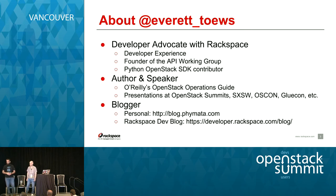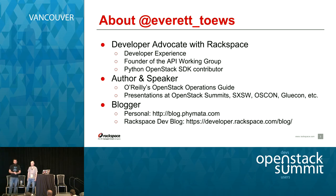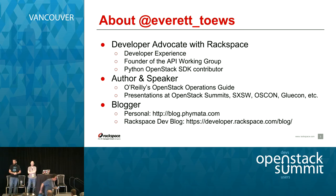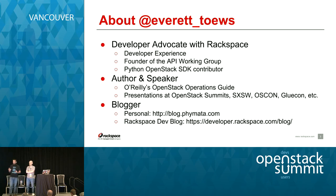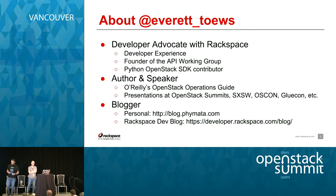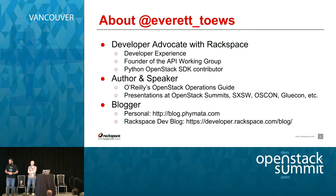My name is Everett Taves. I'm a developer advocate at Rackspace in our developer experience group. I helped found the API working group, which we'll get into a bit later, with Jay Pipes and Chris Yeo. I'm also a Python OpenStack SDK contributor. I've been working on OpenStack-related technologies for the past three or four years, pretty close to its inception. I write and speak as well.